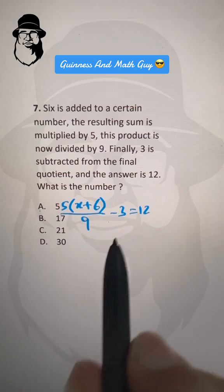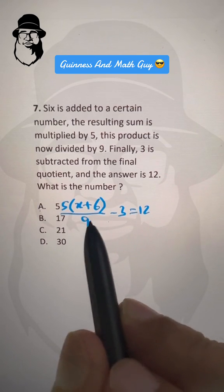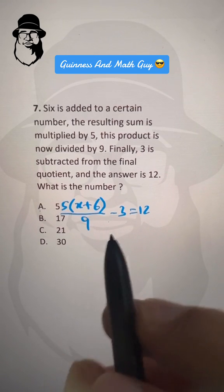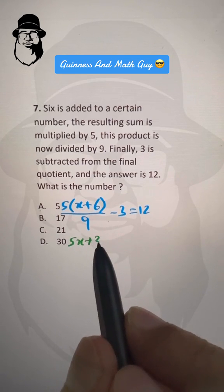Let's multiply all the equation by 9. So 9 times this will cancel this 9 with that 9. So 5 times x is 5x, plus 5 times 6 is 30.